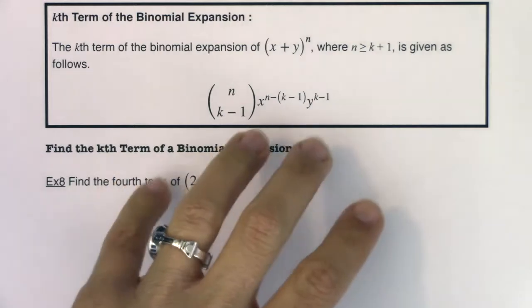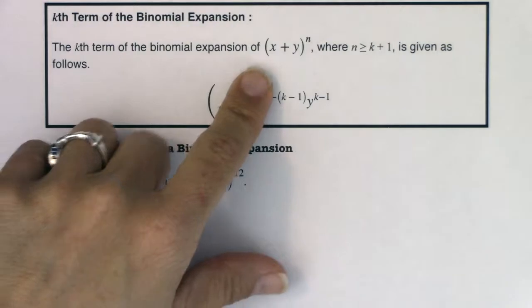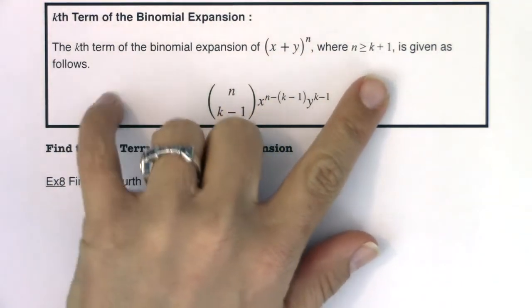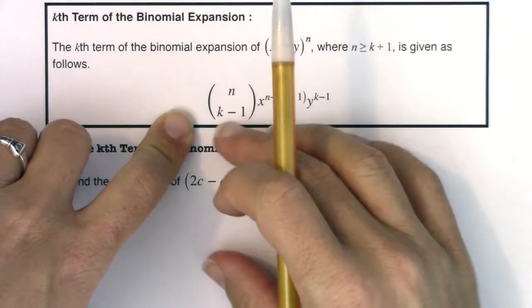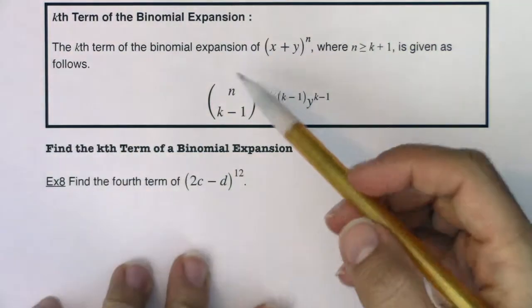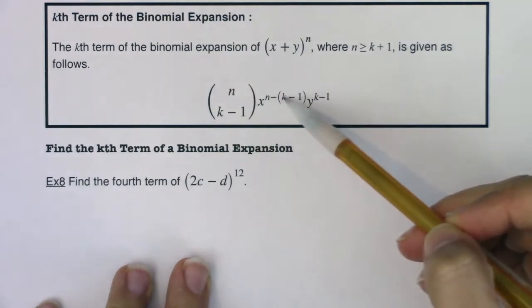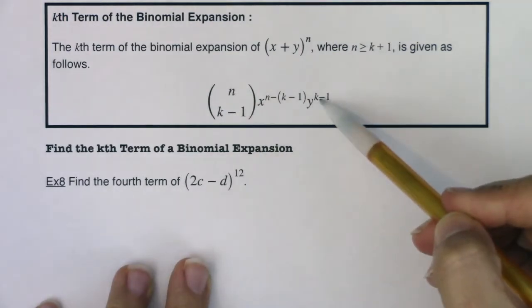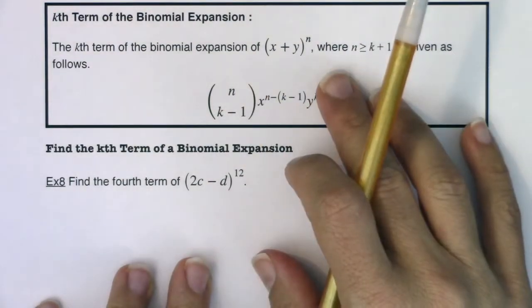This is the formula for it and it looks worse than it actually is. So the kth term of the binomial expansion (x + y)^n where n is greater than or equal to k + 1 is given as follows. If you want the kth term, instead of using the entire binomial theorem, most likely in combo with Pascal's triangle, we're going to do n choose (k - 1). We'll do x^(n - (k - 1)) times y^(k - 1). And I know that sounds awful, but I'm going to show you how that works out. It's not too terrible once you get going.